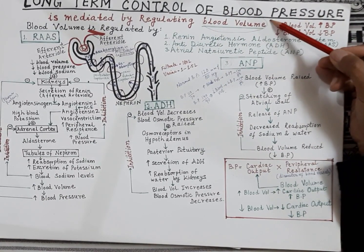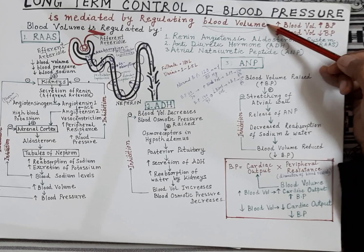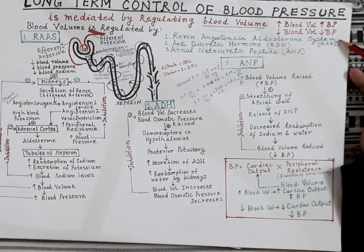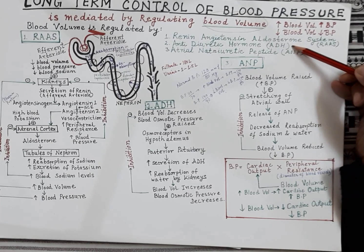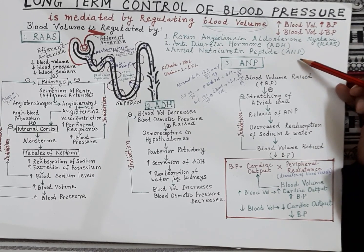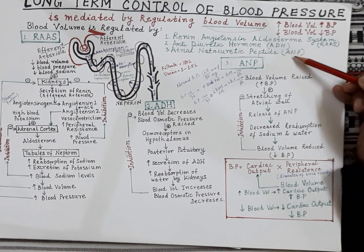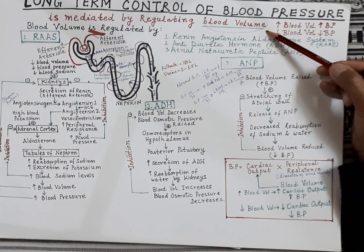This control of blood volume is regulated by three systems. The first system is the renin-angiotensin-aldosterone system, that is the RAS. The second is the anti-diuretic hormone which is produced by the posterior pituitary. And the third system is the atrial natriuretic peptide, a hormone produced by the atria — the auricles. These three systems regulate the body's blood volume, and that blood volume regulates the blood pressure.